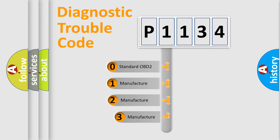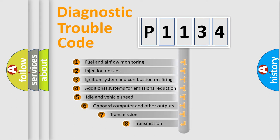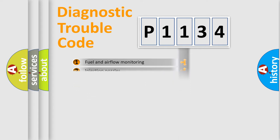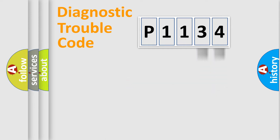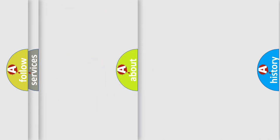If the second character is expressed as zero, it is a standardized error. In the case of numbers 1, 2, or 3, it is a more specific, manufacturer-specific error expression. The third character specifies a subset of errors. Only the last two characters define the specific fault of the group. This division is valid only when the second character is expressed by the number zero.